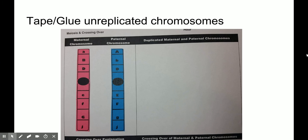First thing we want to do is tape down the maternal chromosome, pink one, in that upper left-hand box under maternal chromosome. And the same thing for the paternal chromosome, the blue one, in that upper left-hand box too.